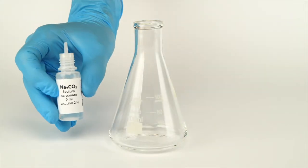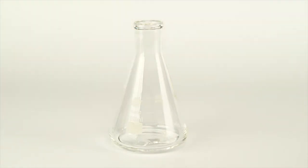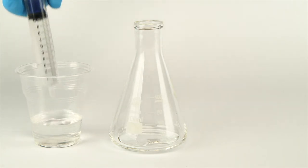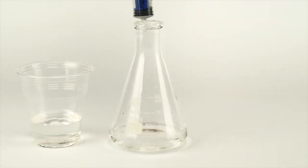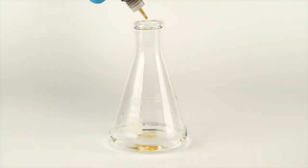First, prepare an alkaline luminol solution. Pour one bottle of sodium carbonate solution into your flask. Use your syringe to add 10 milliliters of water. Add 15 drops of luminol solution.